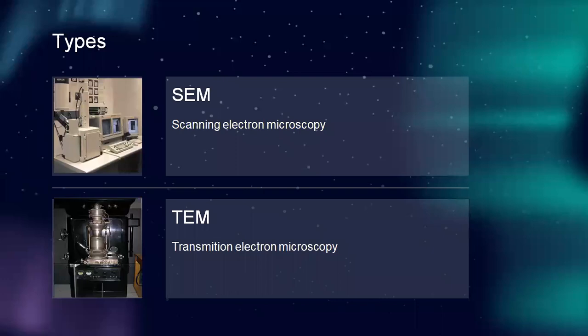Basically, there are two types of electron microscope. First, scanning electron microscope, and second, transmission electron microscope.